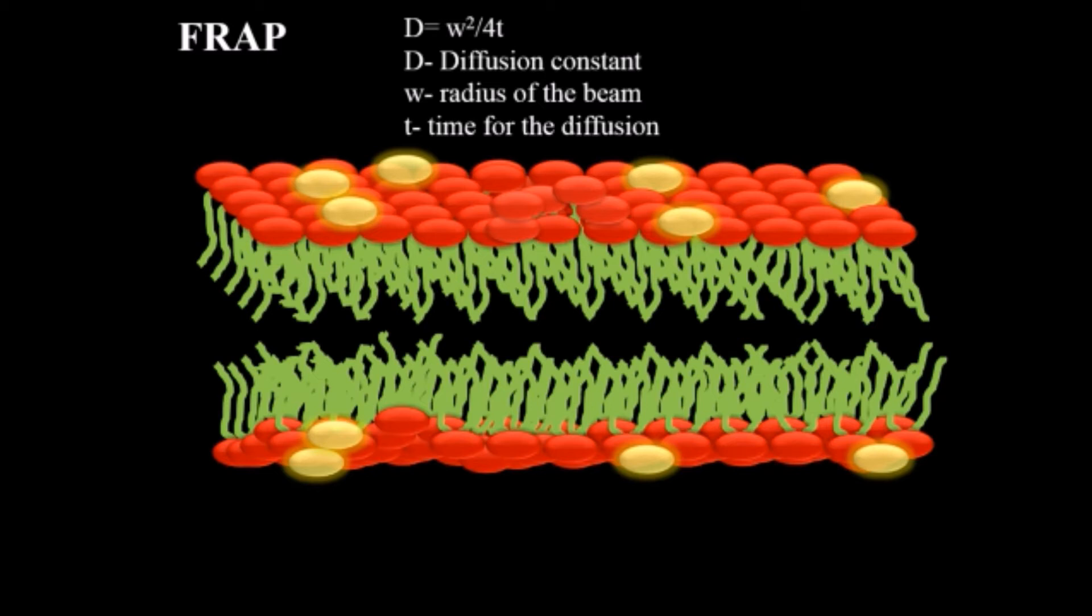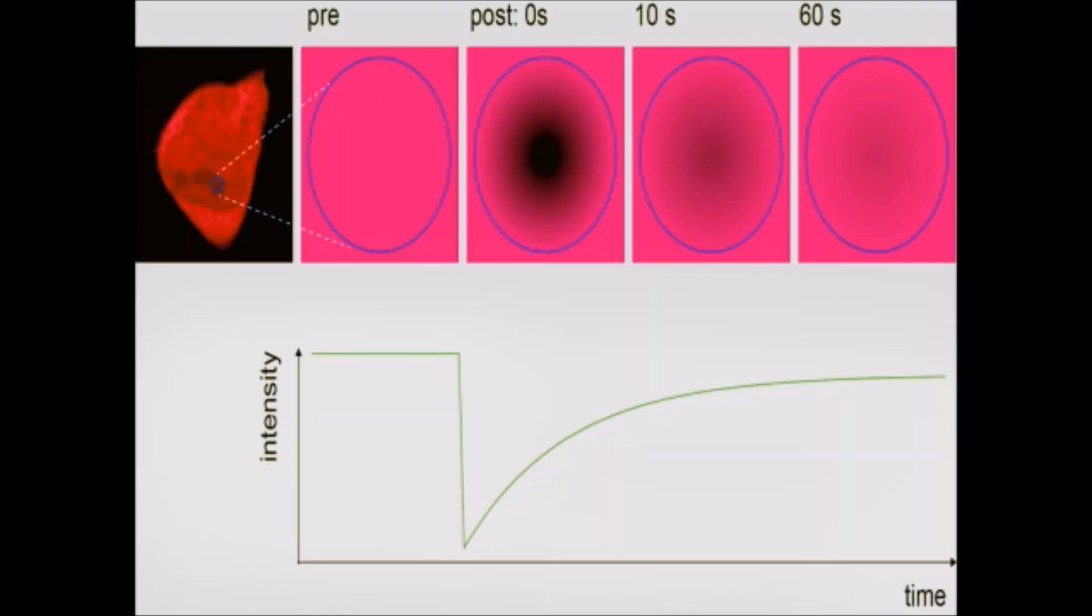Now when we see certain graphs, we always analyze what actually this graph is representing. In our X-axis we have the time period for which we are using our experiment for the photobleaching as well as we are examining the recovery of the fluorescence light. And it is the intensity of the fluorescence light.